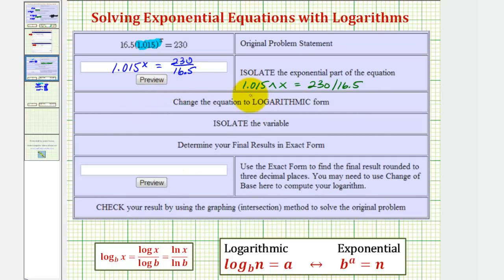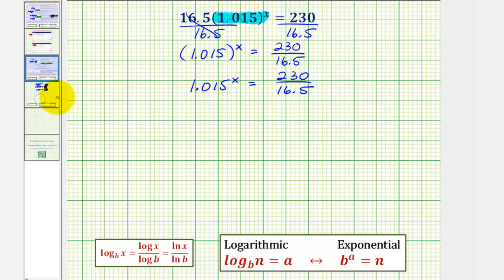Now for the next step, we're going to write the exponential equation as a log equation, isolate the variable if needed, and then get our decimal approximation. So going back to our work, we'll now write this as a log equation by using our definition here and identify the base, the exponent, and the number. Notice in our case, the base is 1.015, the exponent is x, and the number is this quotient.